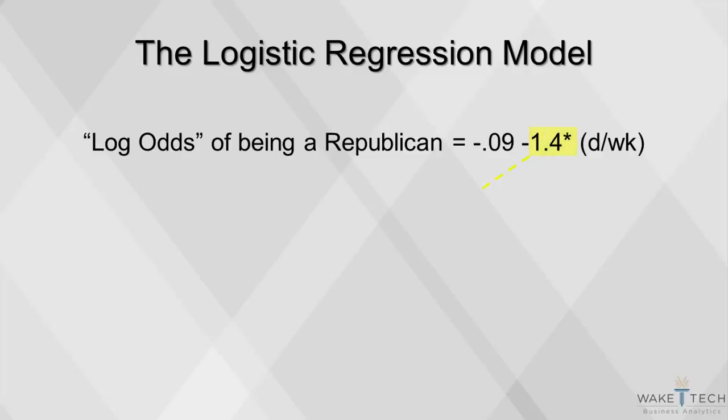To get the actual odds ratio, you have to compute the exponent, which is equal to 0.25. Since the odds are less than 1, it tells us that the more you drink, the lower your odds of being Republican.